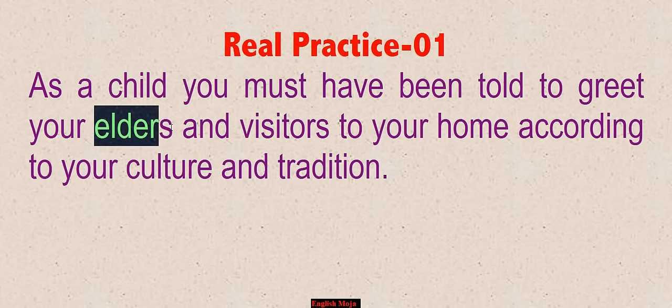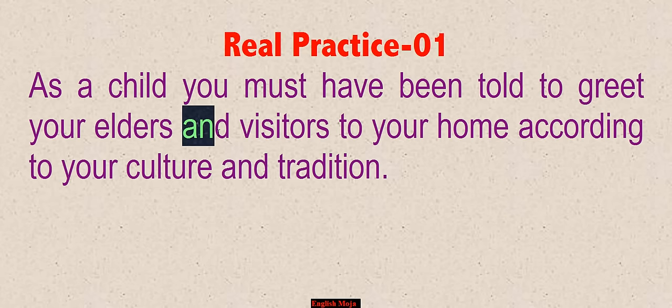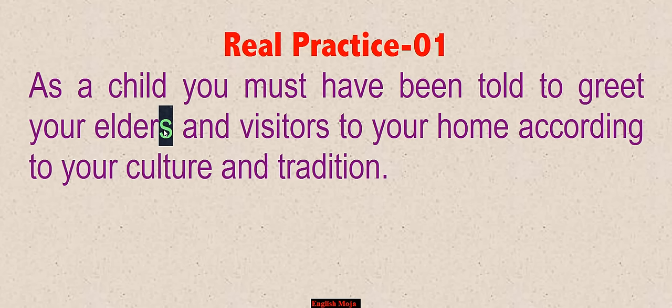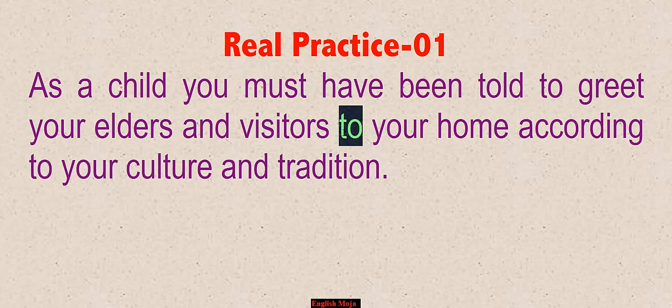This is the conjunction 'and,' which connects both sentences and phrases. The conjunction here includes 'and,' 'but,' or 'or.' 'Visitors' is the obvious noun — it is the same type of noun as 'elders.' So you can see that both 'elders' and 'visitors' are nouns. This is the question: what is 'and' — a preposition or conjunction?